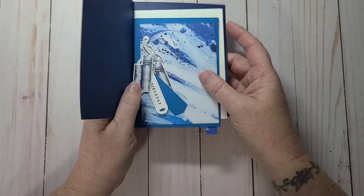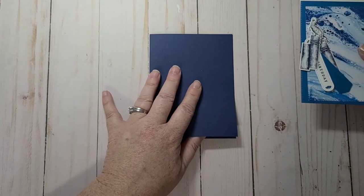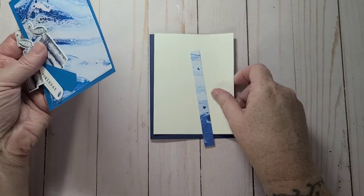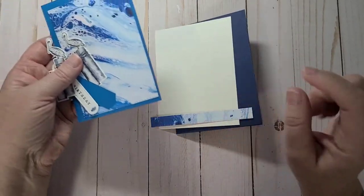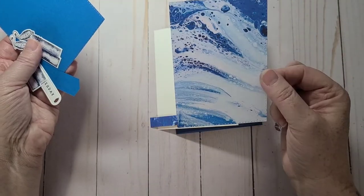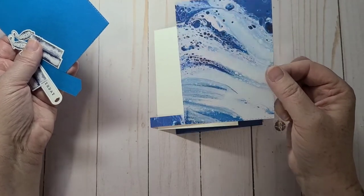So I have a Night of Navy card base. This is eight and a half by five and a half scored at four and a quarter. A piece of basic white for the inside four by five and a quarter. A strip of the designer series paper.